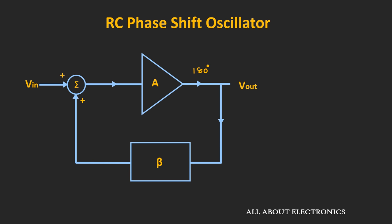To get sustained oscillations in this RC phase shift oscillator, the feedback path should also provide a 180 degree phase shift so that the overall phase shift introduced by the amplifier and the feedback circuit is equal to zero. By tuning the gain of the amplifier and the feedback circuit, it is possible to achieve a loop gain equal to 1.